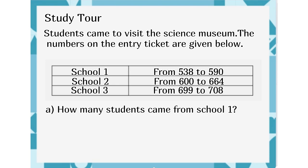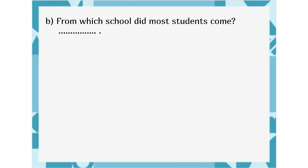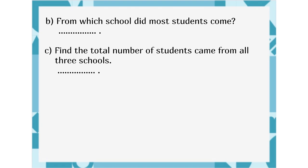A. 590 minus 538 plus 1. B. 590 minus 538 minus 1. C. 590 minus 538. D. 590 minus 539. B. From which school did most students come? C. Find the total number of students came from all 3 schools.